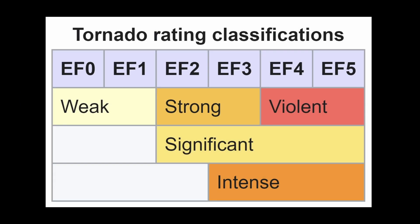And an EF5 incredible damage. There are further subcategories: EF0 and EF1 tornadoes are categorized as weak; EF2 and EF3 are strong; EF4 and EF5 are violent. Sometimes other subcategories are used too — EF2 to EF5 are also called significant tornadoes, and EF3 to EF5 are called intense tornadoes.